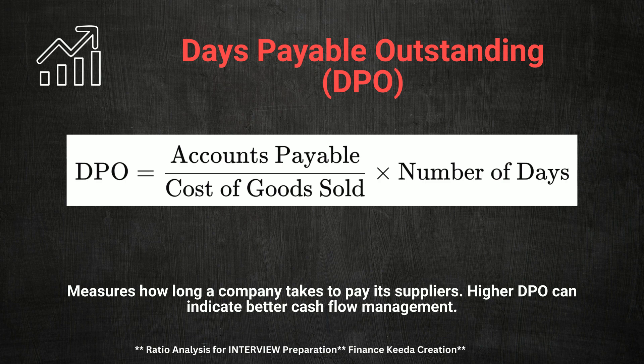Next, we'll explore Days Payable Outstanding, or DPO. This ratio measures how long a company takes to pay its suppliers. A potential interview question could be: what are the implications of a high DPO? A high DPO can indicate that a company is effectively managing its cash flow by delaying payments to suppliers, which can be a strategic move in certain circumstances. However, it's essential to strike a balance — excessively high DPO could damage supplier relationships. Demonstrating your understanding of the trade-offs involved in managing payables will impress interviewers.